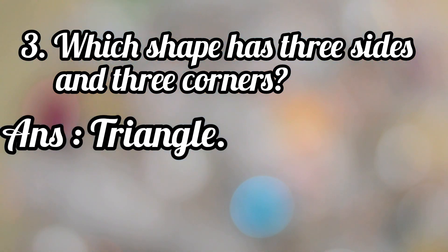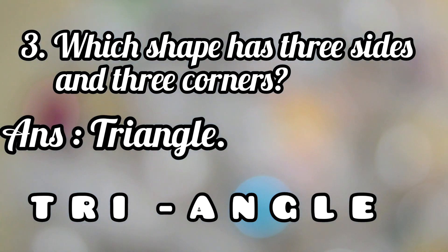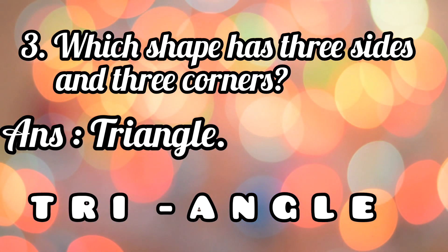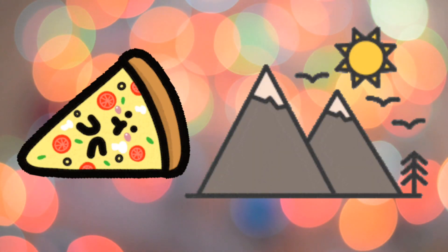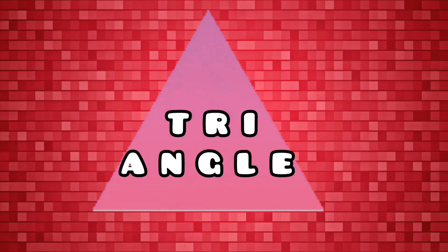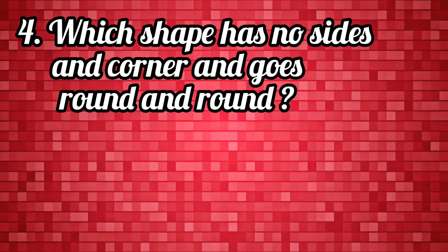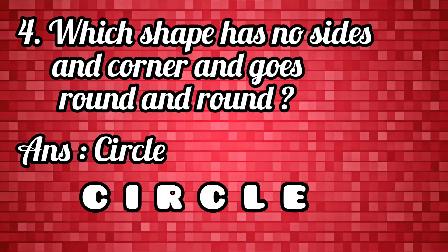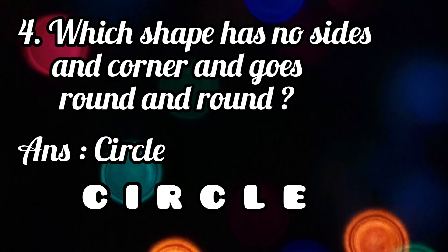Which shape has three sides and three corners? Triangle. T-R-I-A-N-G-L-E. A circle has no sides and no corners, and it goes round and round.